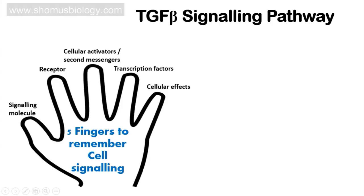Let's begin with the very first parameter: the signaling molecule. In the case of TGF beta signaling, the signaling molecule is the active TGF beta ligand, also called TGFL. Once this TGF beta ligand is present, it binds with the receptor — the TGF beta receptor — and when the ligand binds with the receptor, signaling begins, just like any other extracellular signaling process.